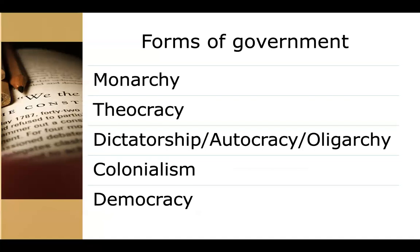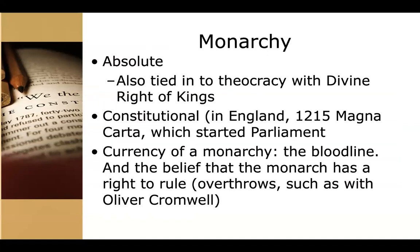So first of all, a brief introduction to some of the main forms of government, and I'll talk about these all in a little bit greater depth. The main ones are a monarchy, of course — one of the predominant forms of government for centuries. Theocracies, based on religion. We have dictatorships in all of their different forms, and colonialism, as well as democracy. We'll talk about each one of these.